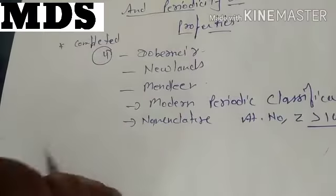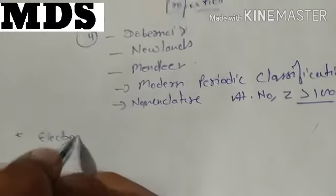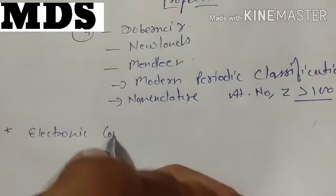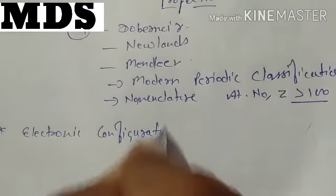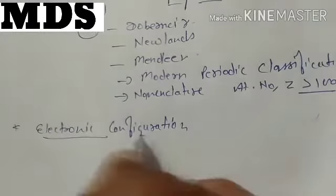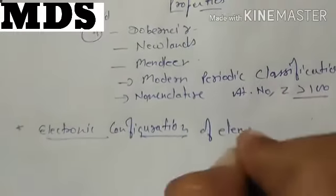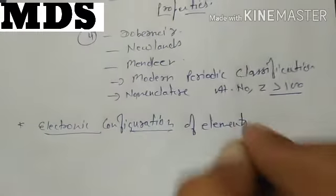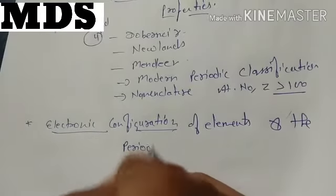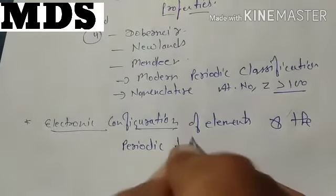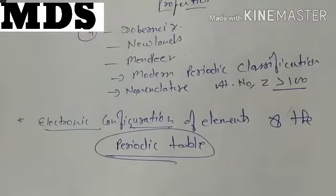Now today's topic is regarding electronic configuration. Electronic configuration you have already studied in the second chapter — how to do the electronic configuration of elements — and how the electronic configuration is associated with the modern periodic table. That's what we are going to find out in this topic.